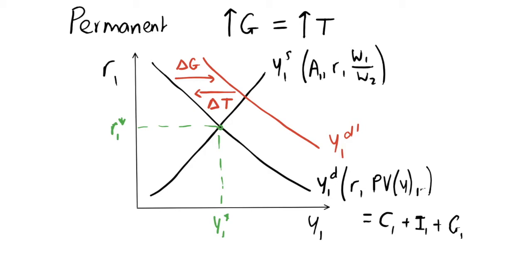So this increase in government spending is then indirectly offset by the fact that we have to increase taxes by the exact same amount. How does this increase in taxes factor into our aggregate demand relation? The aggregate demand function depends on our present value of income. As we said in the previous video, if you increase lump sum taxation, this is equivalent to decreasing somebody's income or wealth by the same amount. So we're going to reduce consumption, and it exactly offsets this increase in government spending for a permanent shock — we shift the aggregate demand curve right back to where it started.